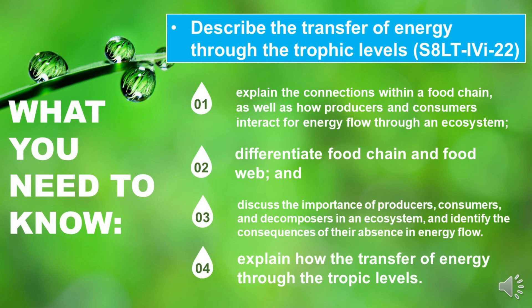Specifically, we have the following objectives. First, we are going to explain the connections within a food chain as well as how producers and consumers interact for energy flows through an ecosystem. We are also going to explore the difference between a food chain and a food web. Third, we are going to discuss the importance of producers, consumers, and decomposers in an ecosystem and identify the consequences of their absence in energy flow. Lastly, we are going to explain how the transfer of energies occurs through the trophic levels.